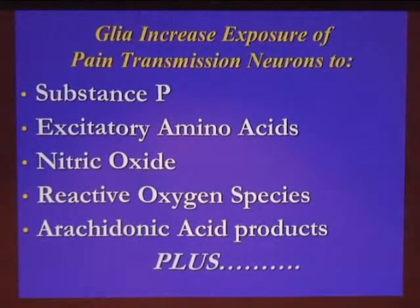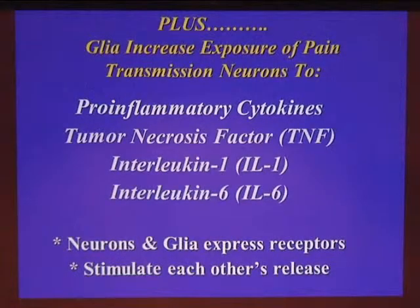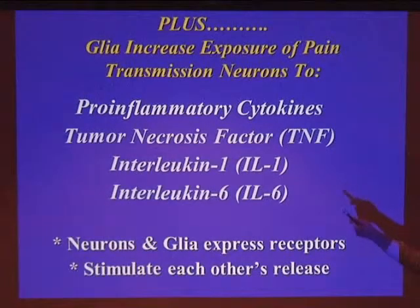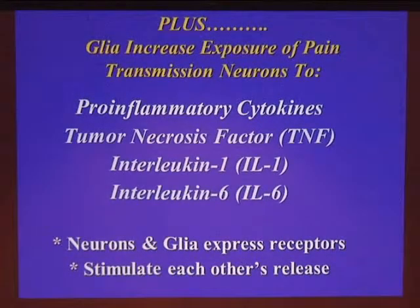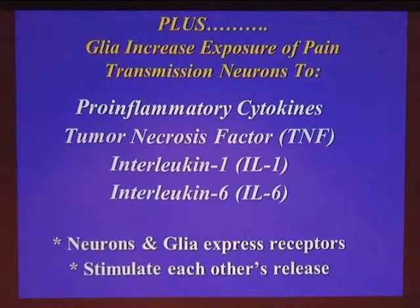Activated glia enhance pain processing by exposing pain transmission nerves in the spinal cord to a host of pain-relevant substances. The power of activated glia includes pro-inflammatory cytokines we've been hearing about: tumor necrosis factor, interleukin-1, and interleukin-6. Importantly, neurons as well as glia express receptors and produce pro-inflammatory cytokines. Each one of these cytokines can further stimulate the release of all the others, creating a cascade that can mediate ongoing pain changes in chronic pain.